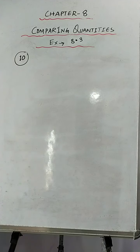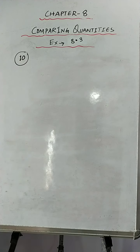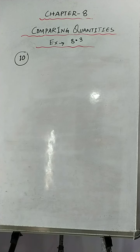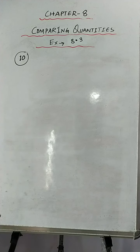Hello students. Today I will explain question number 10 and 11 of Exercise 8.3, Chapter 8, Comparing Quantities. Question number 10 is very interesting. The population of a place increased to 54,000 in the year 2003 at the rate of 5% per annum. They are asking us to find the population in 2001, and also what would be its population in 2005.